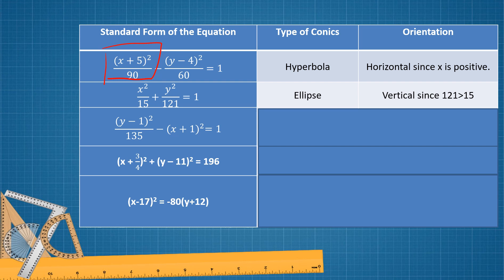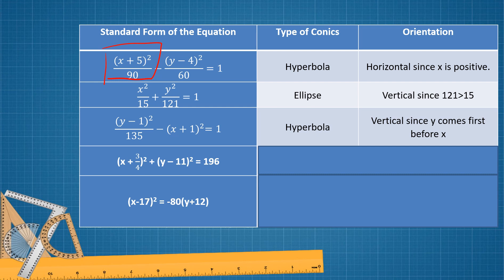For the third example, there is a fraction involved, and since the two terms are separated by a minus sign, the type of conics is a hyperbola. The orientation is vertical because y comes first before x, or y squared is positive.